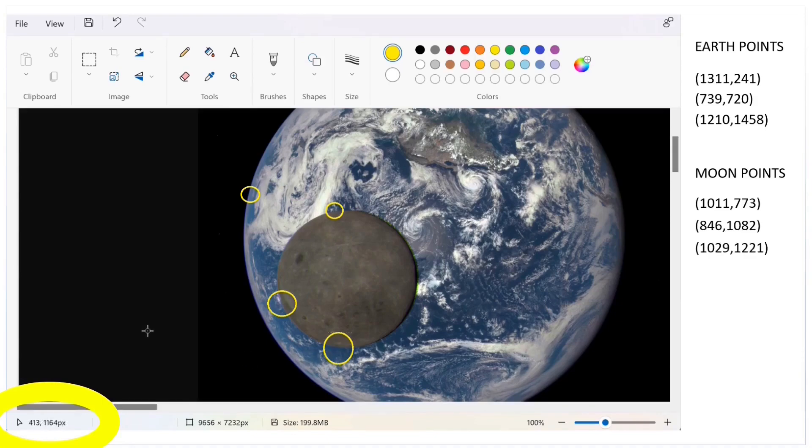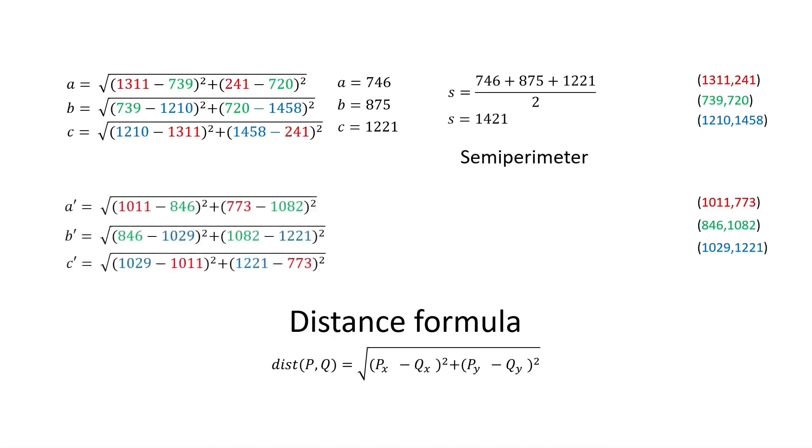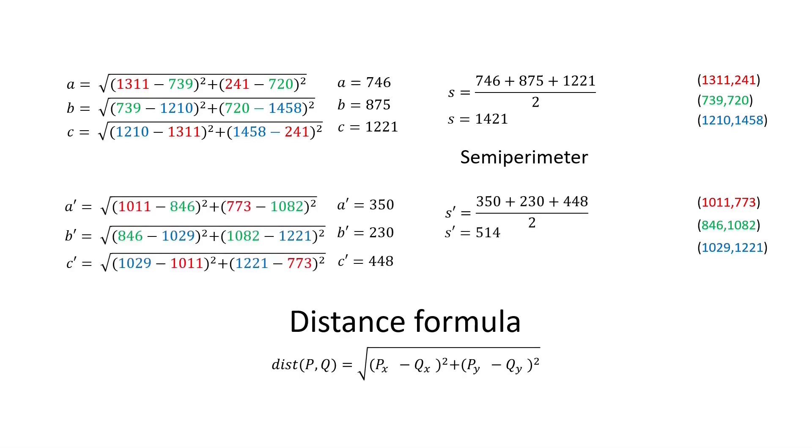And then I repeat for the Moon. Now take these values and color them. For the Earth points, we need to take each of three pairs of these, and plug them into the distance formula three times, to find the distances between them, which become the sides of the Earth triangle. Now evaluate the semi-perimeter of the triangle. And then repeat for the Moon. But instead of reusing A, B, and C, let's put an apostrophe, or prime, on each. I know I'm being a little casual with the notation. To me, prime means other.